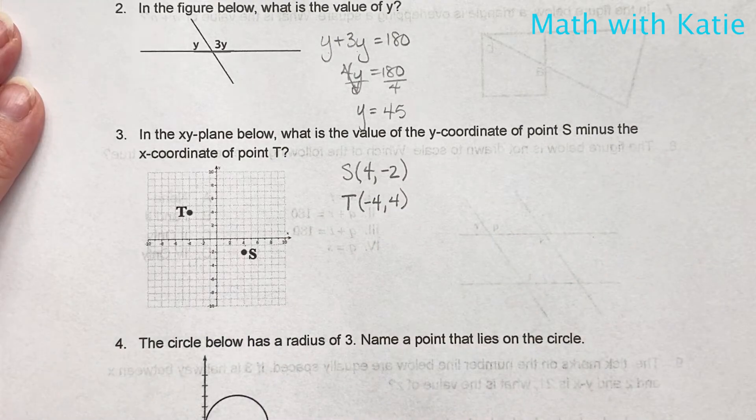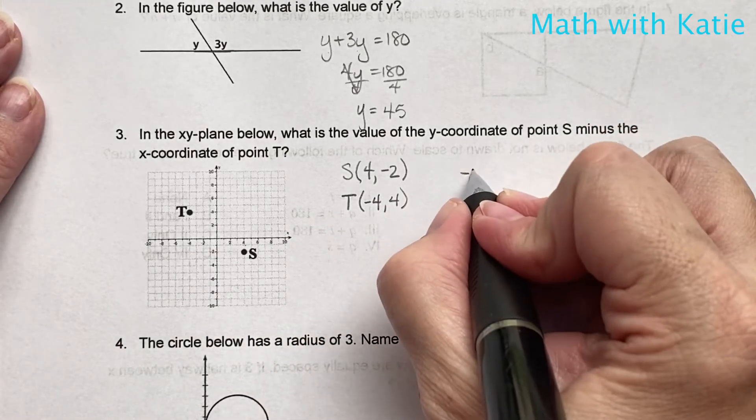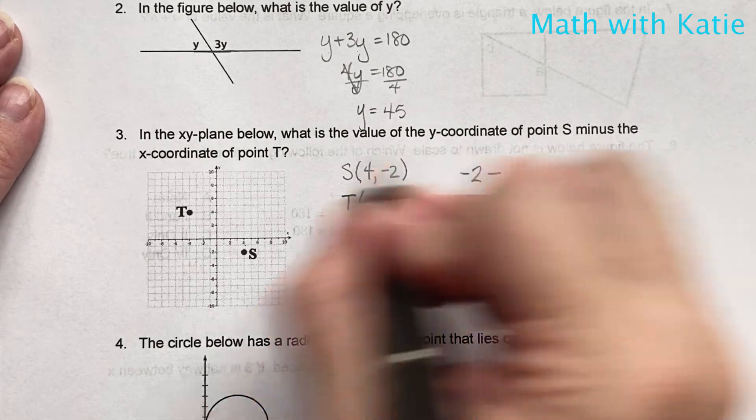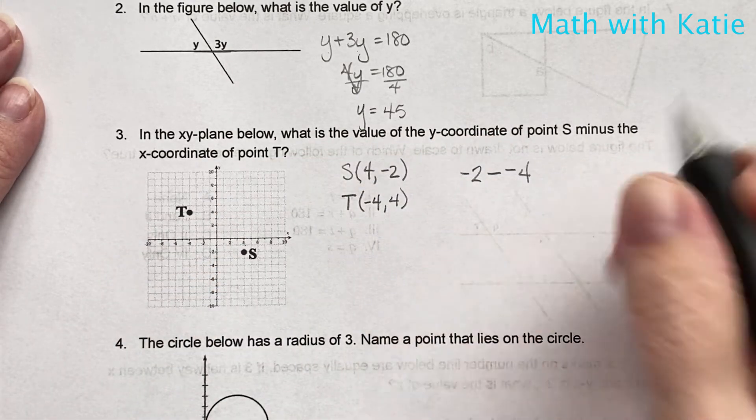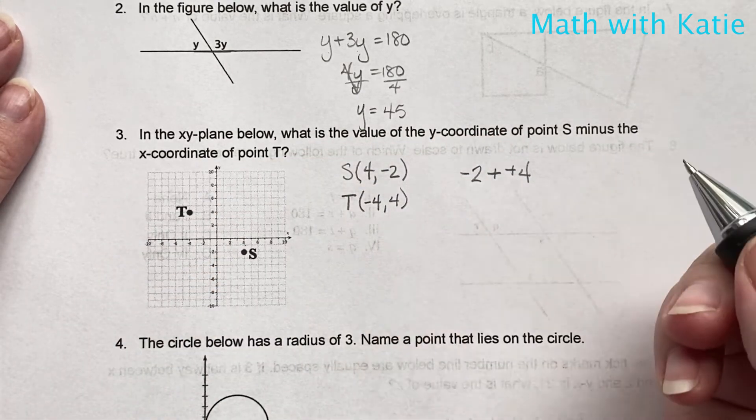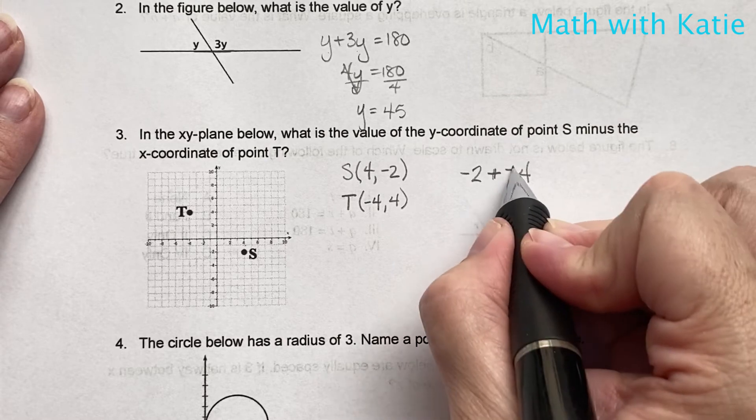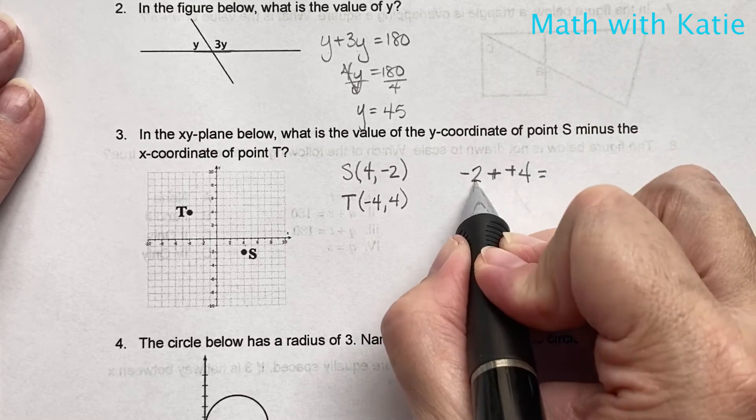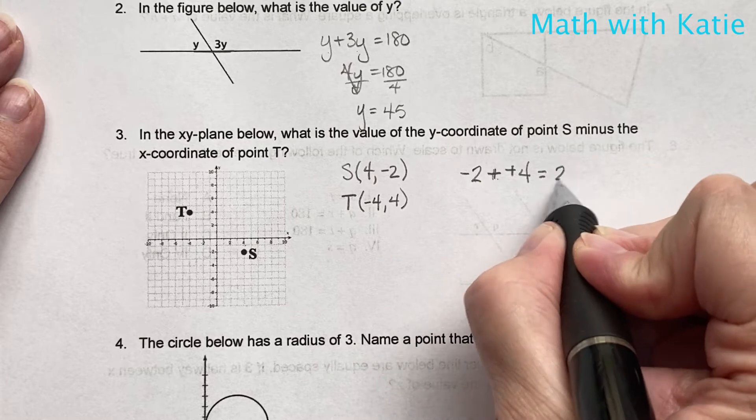So the y-coordinate of S minus x-coordinate of T, negative 4. Two negatives make a positive, or if you remember, add a line, change the sign. So negative 2 plus 4 gives us positive 2.